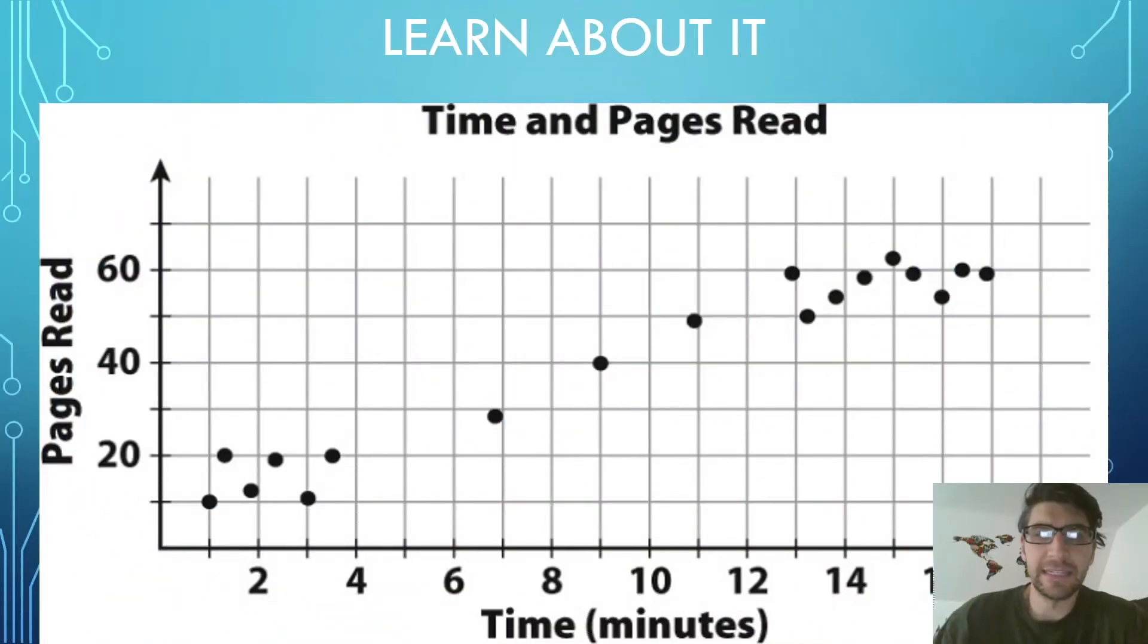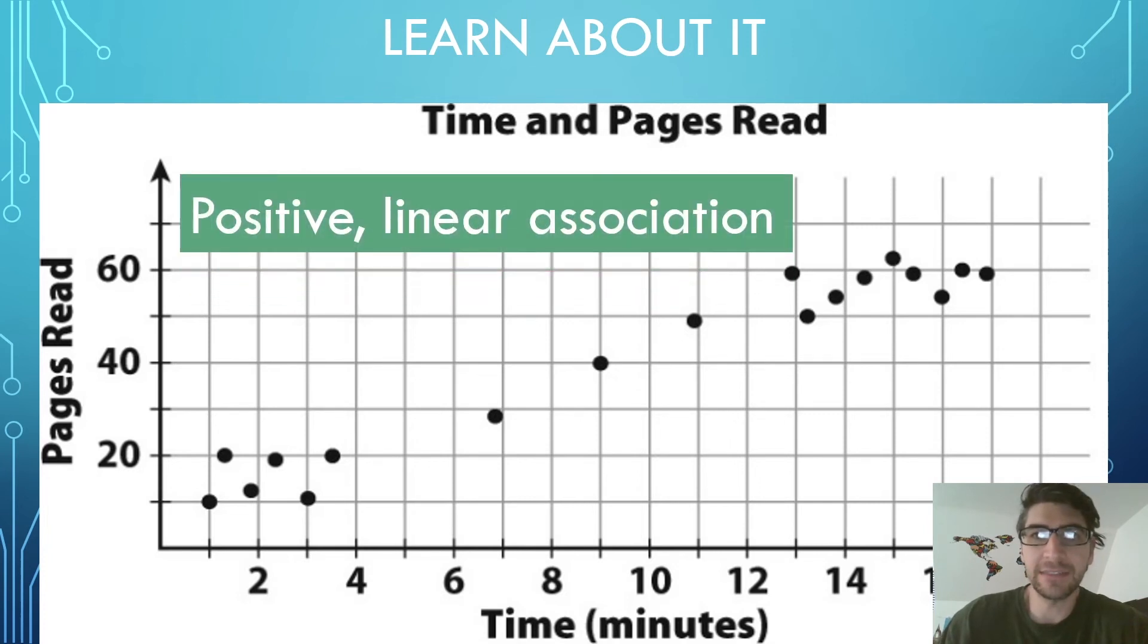Going back to the data that we looked at earlier, which showed us how many pages were read based on how long students had read, we can see that, and this is something that will be really important for next week's lesson, there is a general pattern in the data. The more time spent reading generally means more pages that were read. This data has a positive linear association. Positive because as one quantity increases, the other quantity also increases. Linear because the data appears to be close to forming a line.